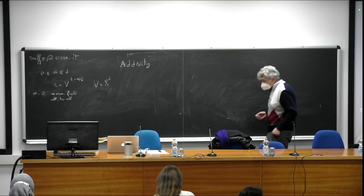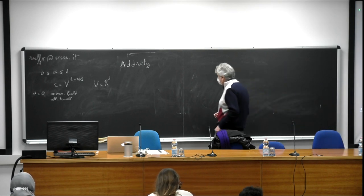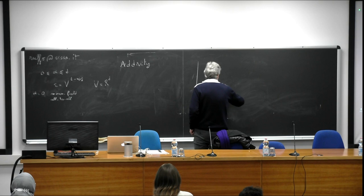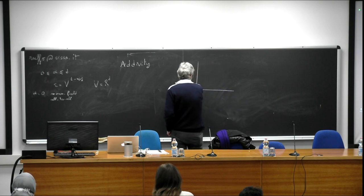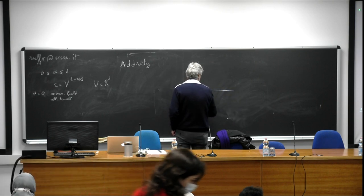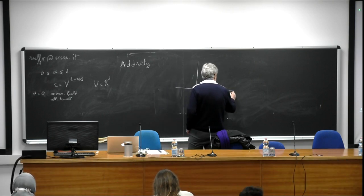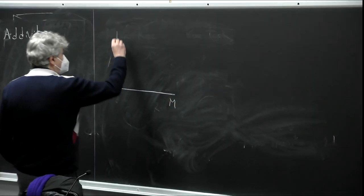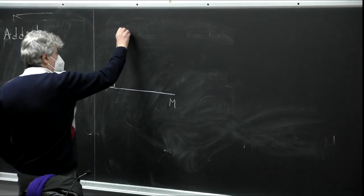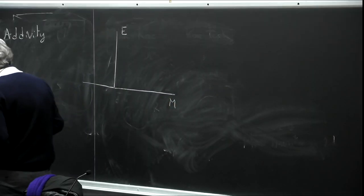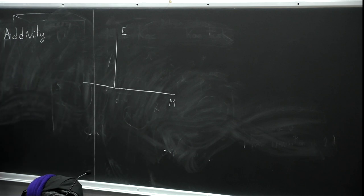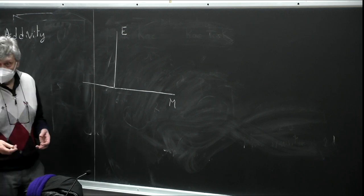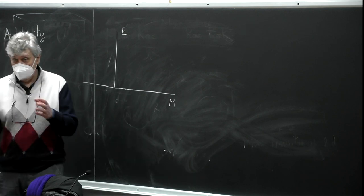So the question that was put, even rigorously, was: I have a space of magnetization and energy, and you know that not all values of magnetizations are possible in a model.